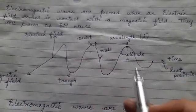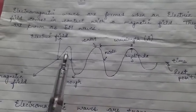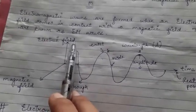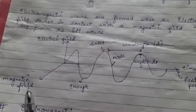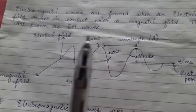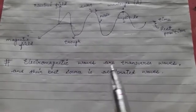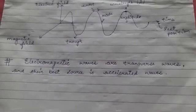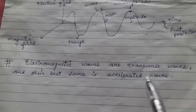So this is wave formation diagrammatically — the EM wave has both electric and magnetic components. Electromagnetic waves are transverse waves, and their best source is accelerated charged particles.